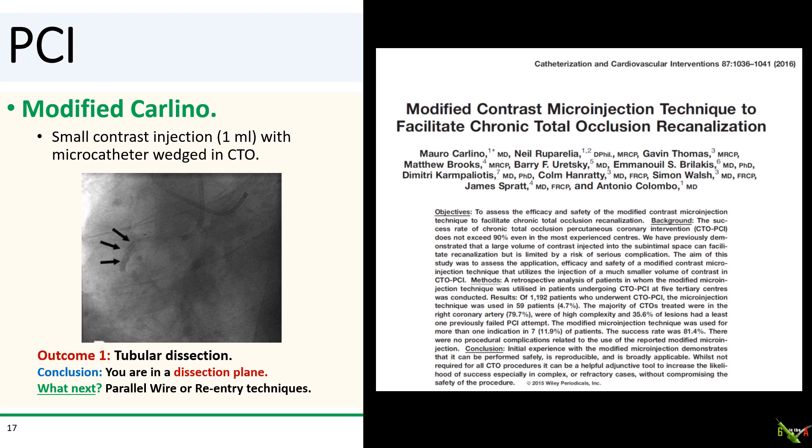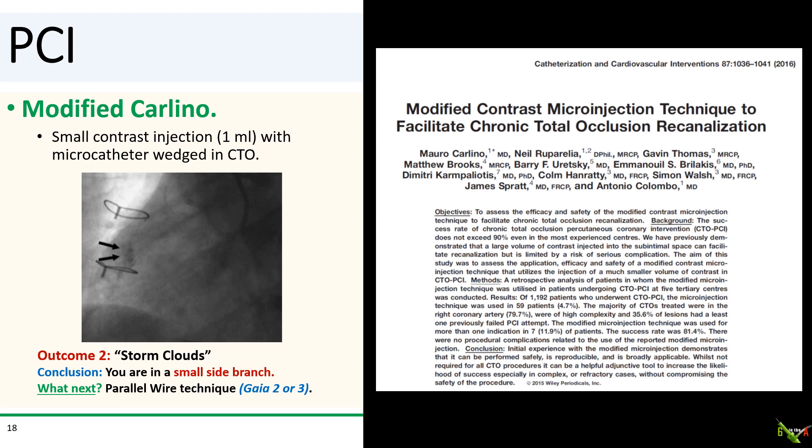There are four possible outcomes. The first is a tubular dissection — if you see this, your wire is in a dissection plane, and your options would be to reach for a parallel wire or move on to re-entry techniques such as with a stingray balloon. The second possible outcome is a storm cloud appearance — if you see this, your wire is probably in a small side branch, and you need to use a parallel wire to get into the main branch. For parallel wiring, I like the Gaia second or third wires, which have one-to-one torque control and are more maneuverable. In general, the parallel wire should be stiffer than your first wire.